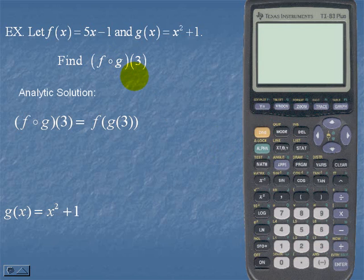Remember that we were given g of x, which is x squared plus 1. In order to find g of 3, we would simply replace x with 3. Therefore, g of 3 is equal to 10.